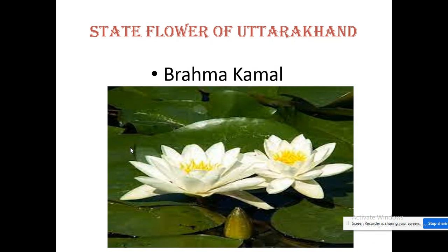I will give you some information regarding the state flower of Uttarakhand. Can you read which is the state flower? It is Brahma Kamal. Kamal means lotus, so it is the same as lotus — white in color — that is Brahma Kamal. And children, Uttarakhand is also called Deva Bhoomi, meaning land of gods.